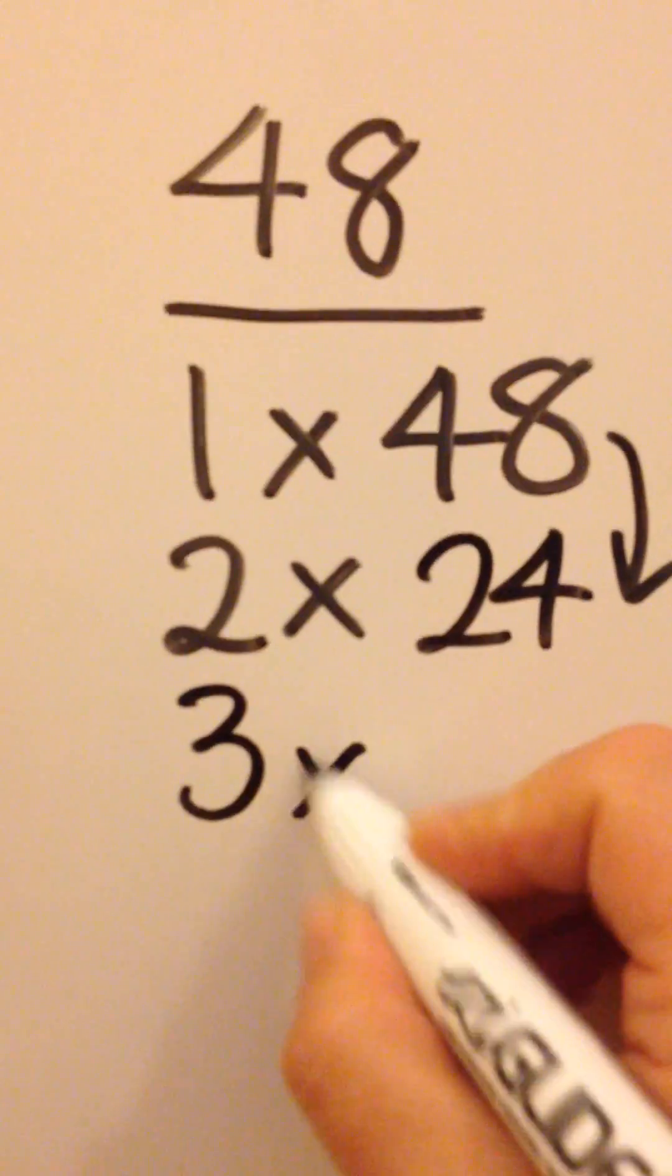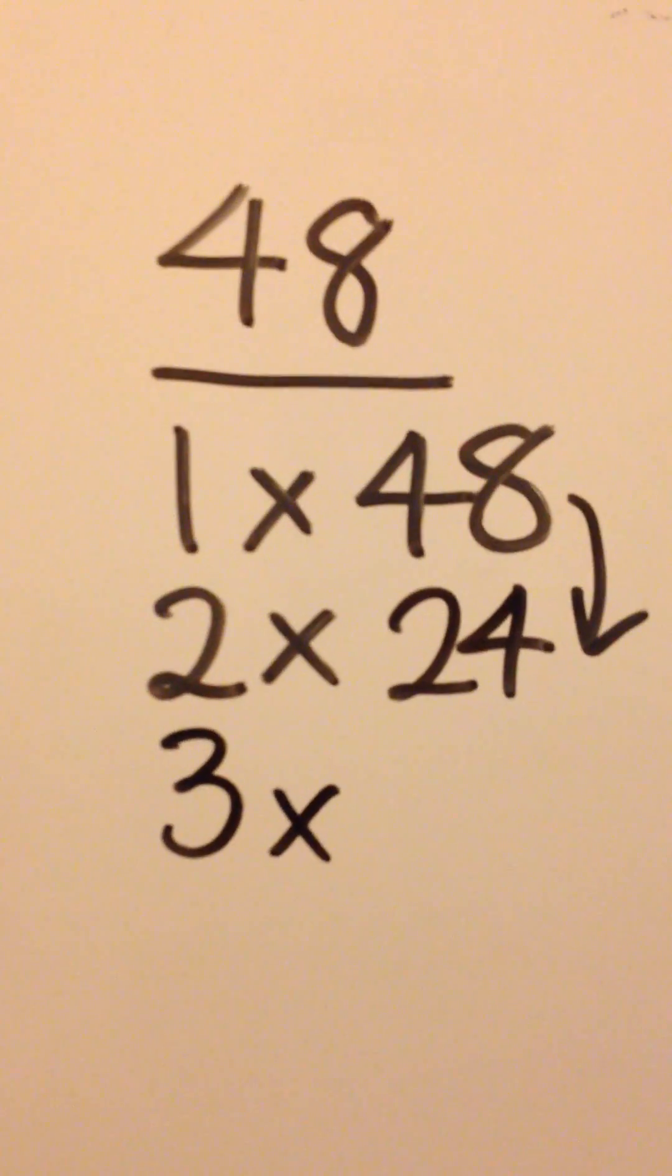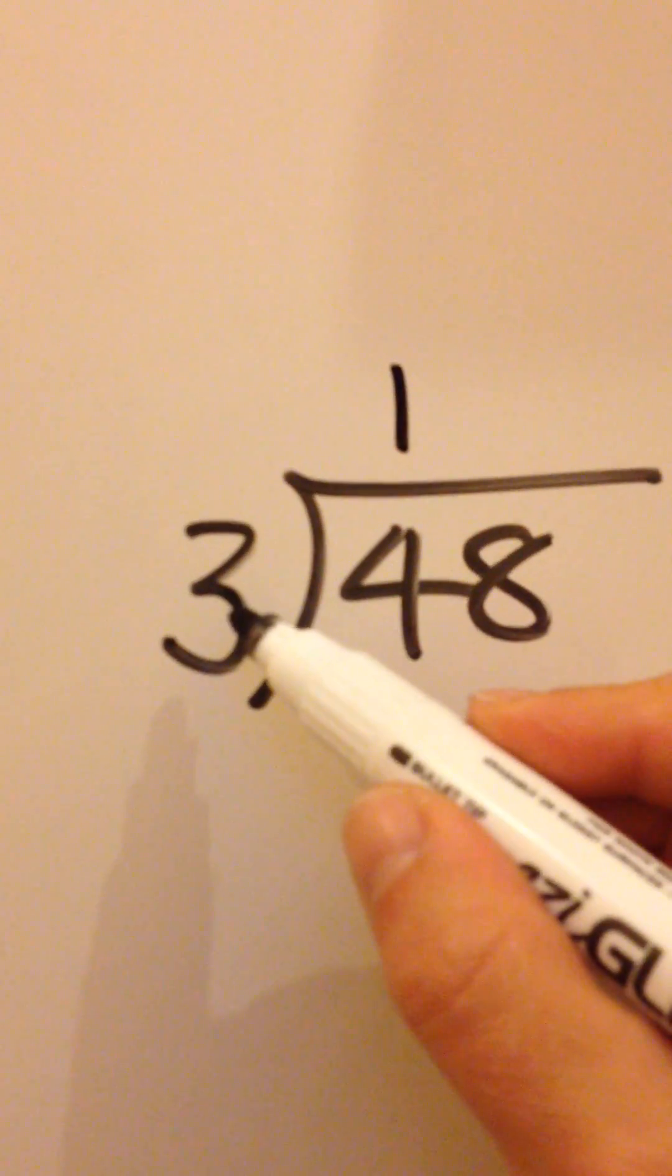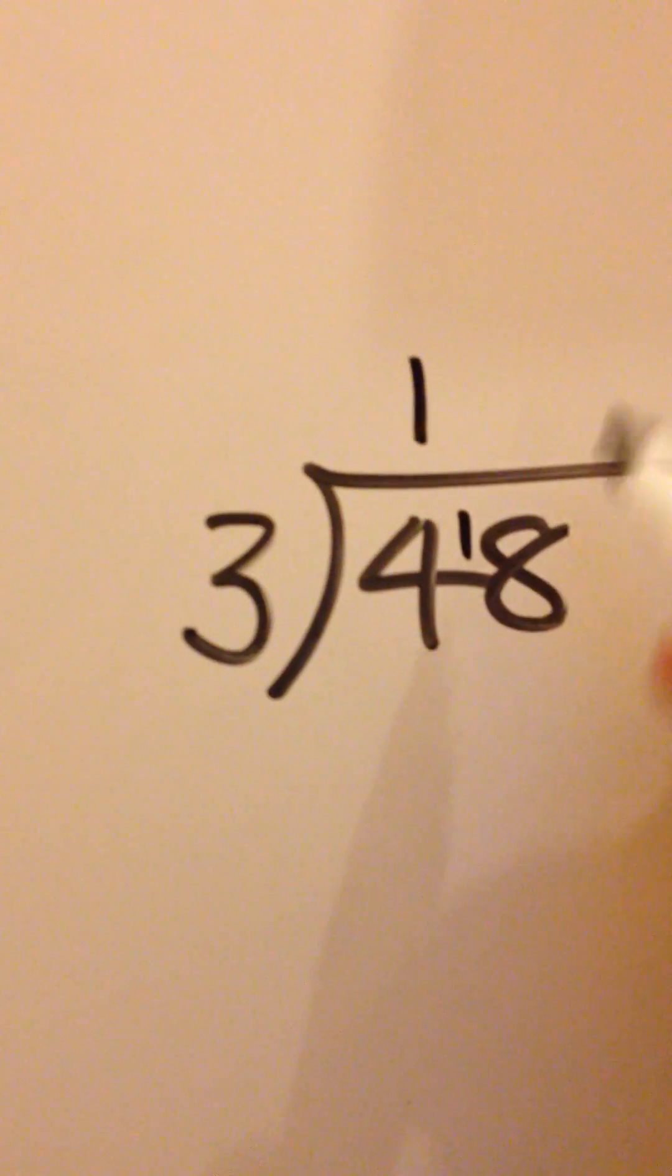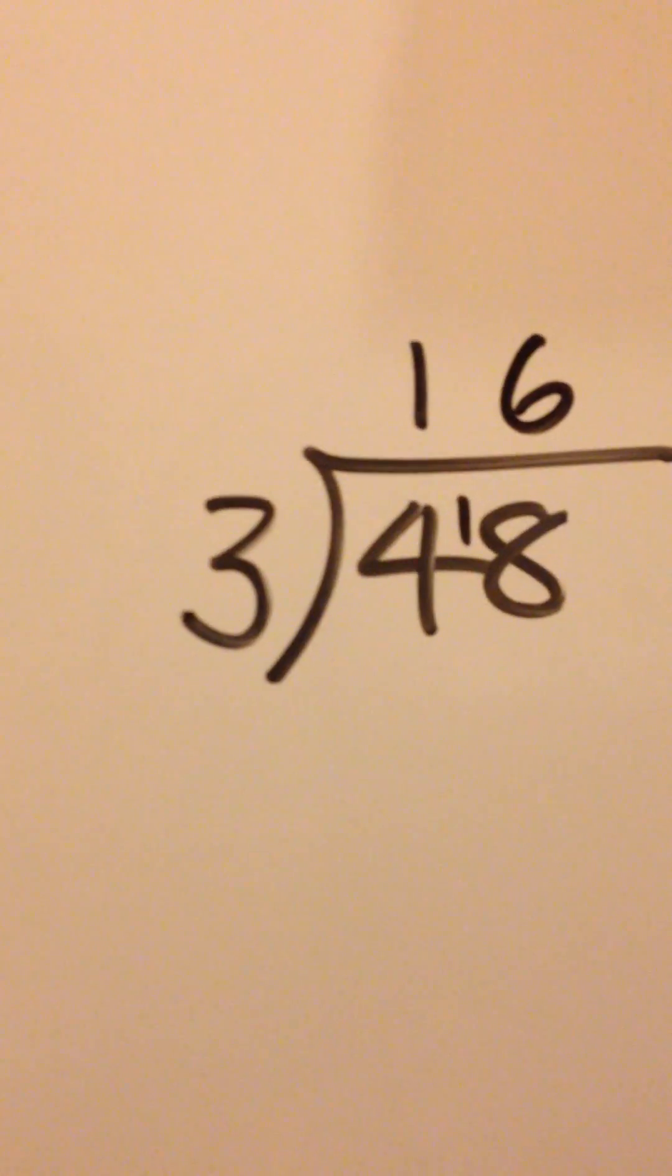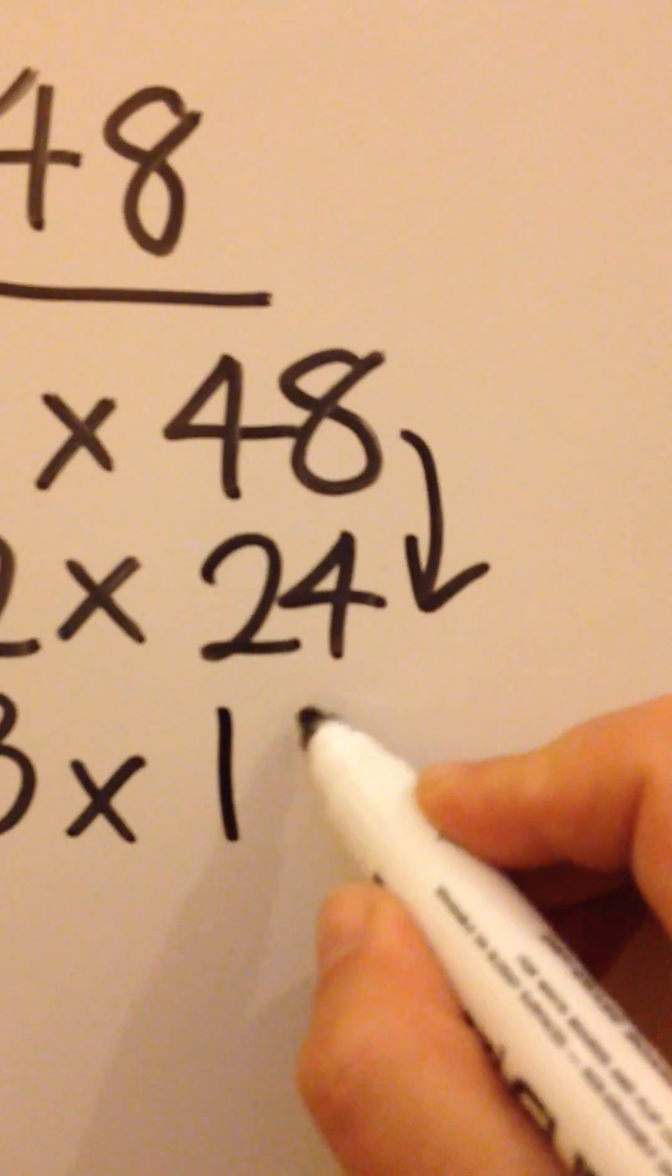Let's move on to 3. I'm not sure if 3 is a factor of 48, so I'm going to use a bus stop over here. 3s into 4 goes 1, remainder 1. 3s into 18 goes 6. There's no remainder, so 3 is a factor. It's 3 times 16.